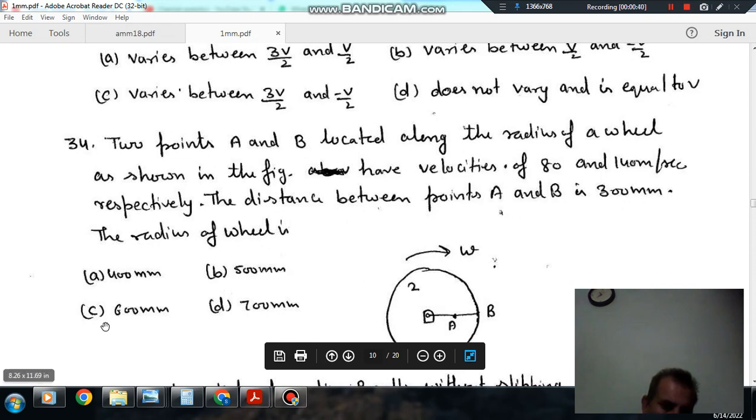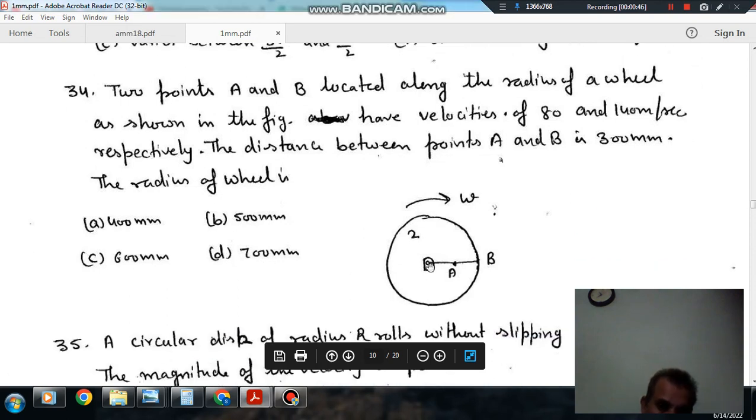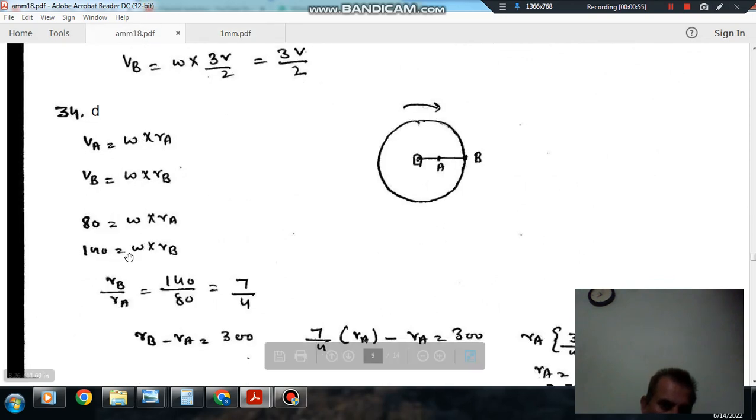mm, (c) 600 mm, (d) 700 mm. So this is the wheel, this is point A, this is point B, this is omega.